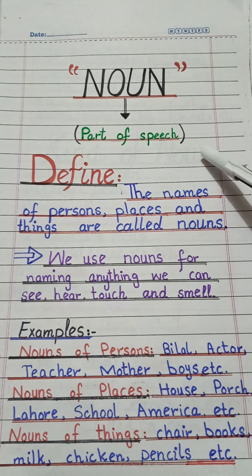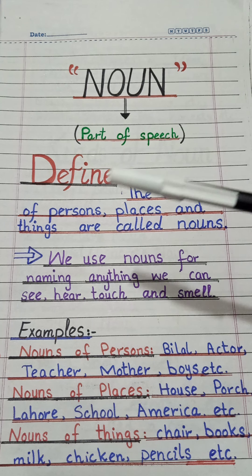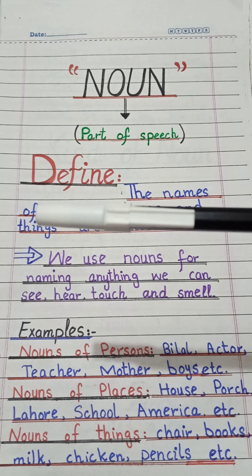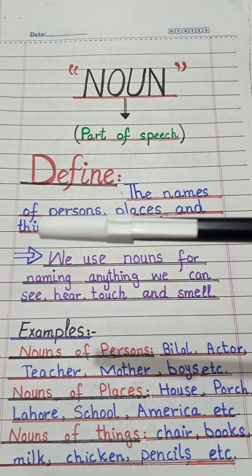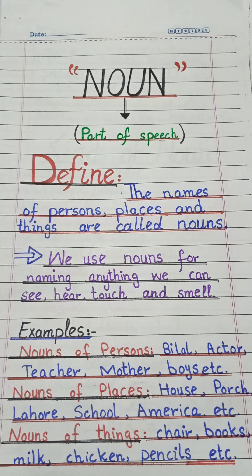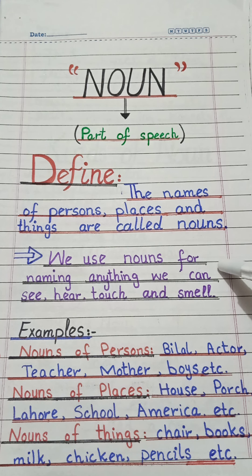That's why we are also called nouns. This is a pen in my hand — it is also called a noun because it also has its name. That's why it is called noun. Let's define noun: the names of persons, places and things are called noun. We use noun for naming anything we can see, hear, touch and smell.